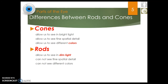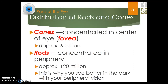Here's a tip to remember the difference between rods and cones. When I think of cones, I think of ice cream — with all the different flavors and colors. Cones help you see color. For rods, I think of a flashlight — a cylinder that helps me see in the dark. Rods help you see in the dark but don't help you see color. Cones are concentrated in the fovea; rods are in the peripheral edges of the eye, which is why you can see in the dark better using your peripheral vision.